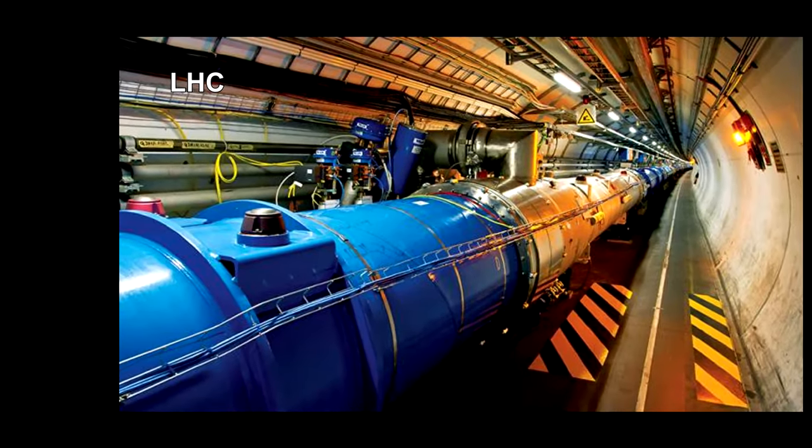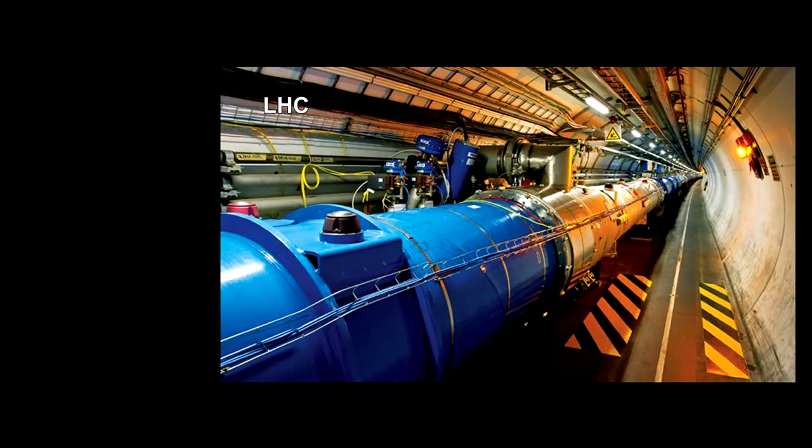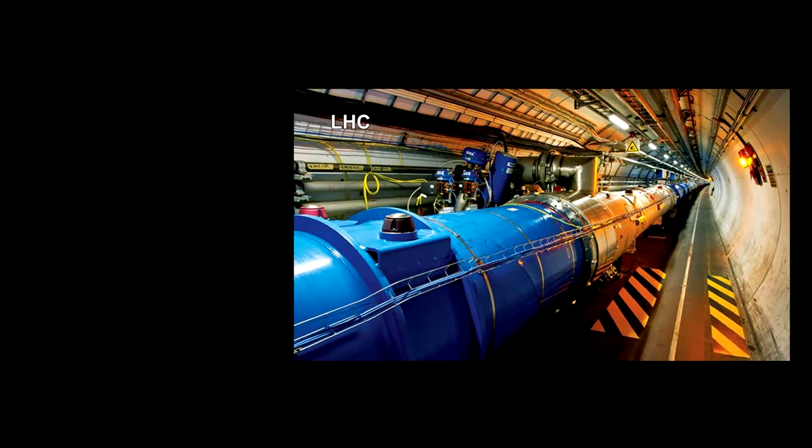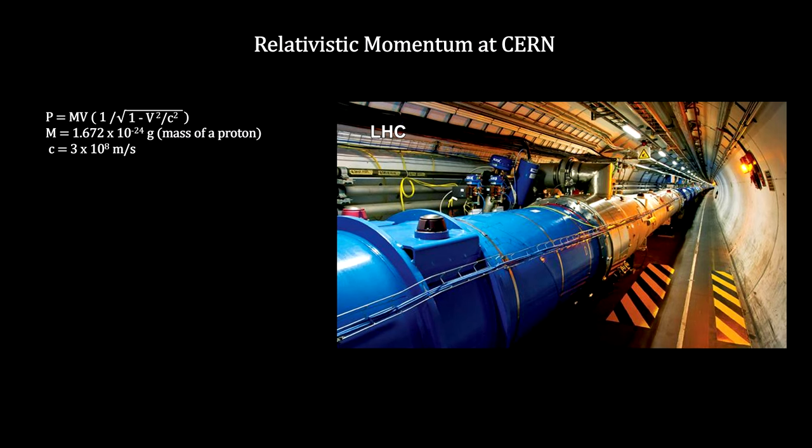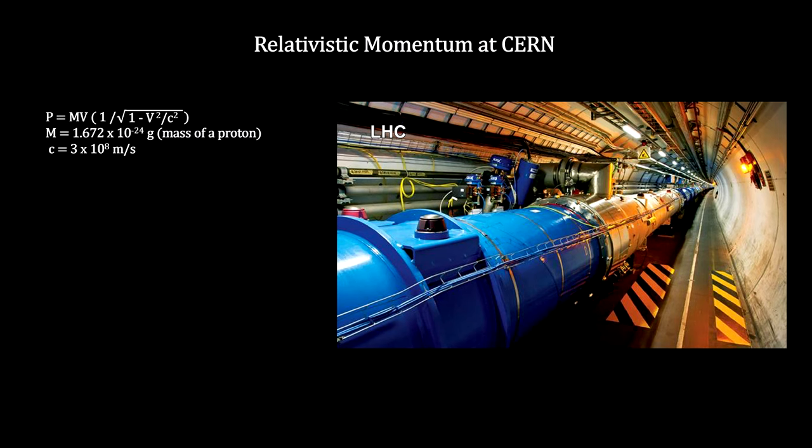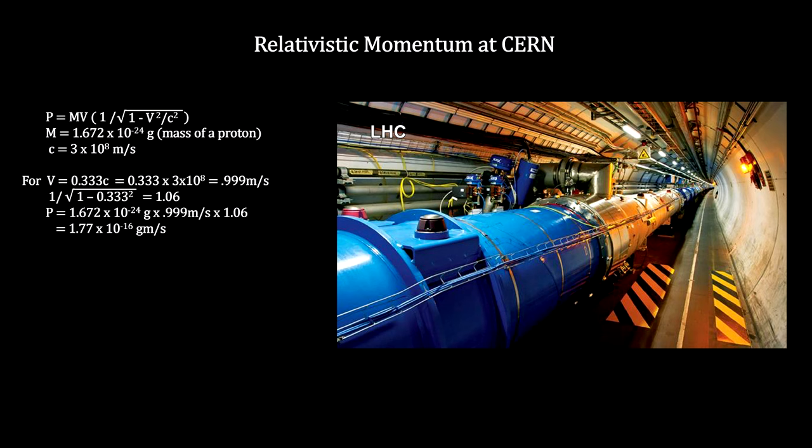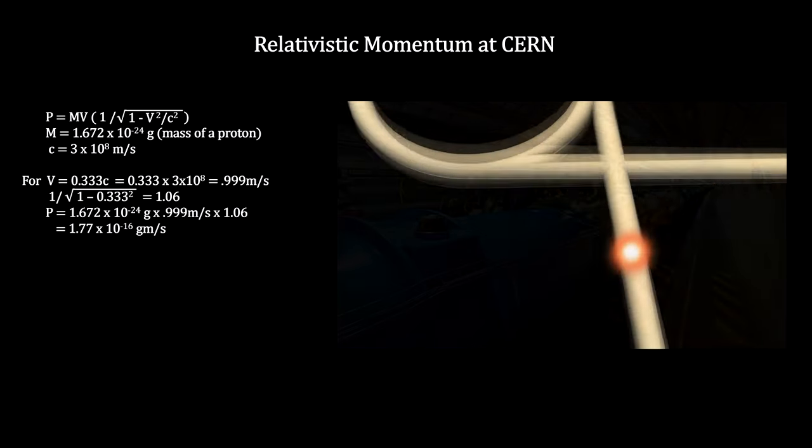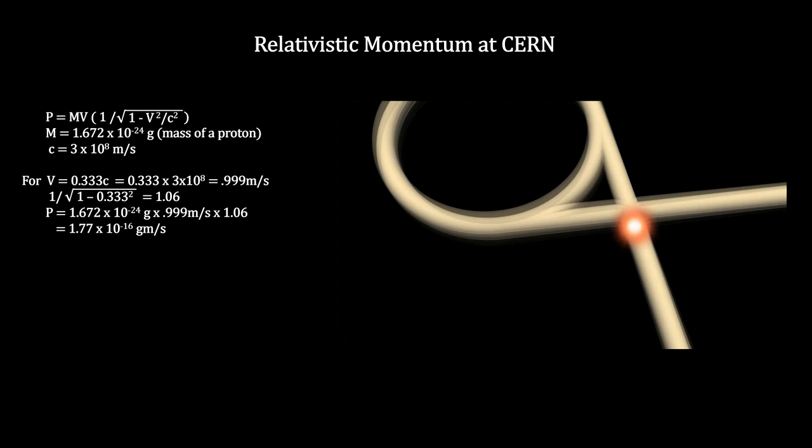Our best example of this is the Large Hadron Collider at CERN where the Higgs boson was found. To begin with, protons are accelerated down a linear accelerator. By the time they reach the first cyclotron, they're traveling at one-third the speed of light.